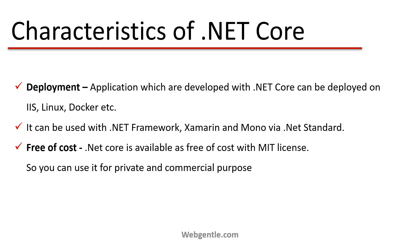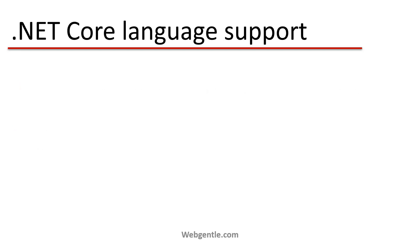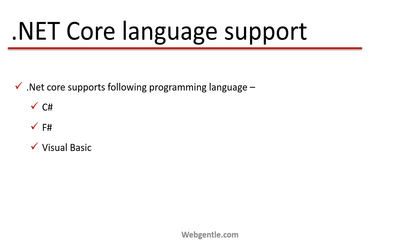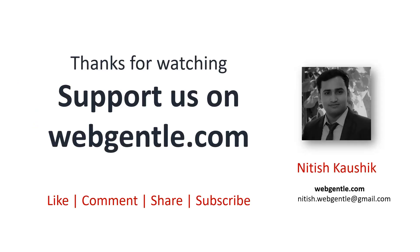.NET Core is available free of cost under the MIT license on GitHub. You can use this framework for private and commercial application development, completely free. The programming languages supported in .NET Core are C#, F#, and Visual Basic. You can use whichever language you prefer to build any type of application in the .NET Core framework. That's all for this part — thank you for watching, have a great day.